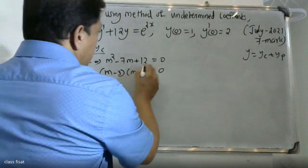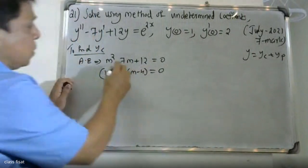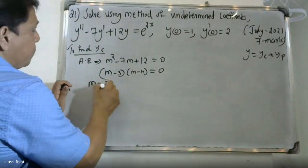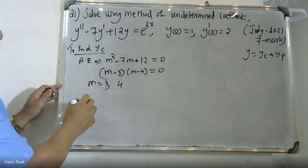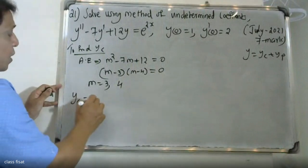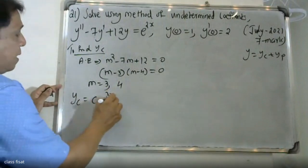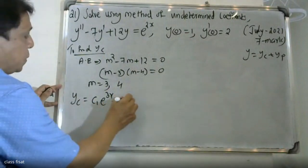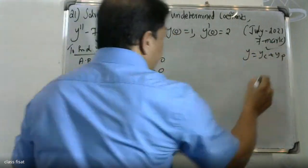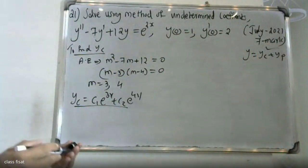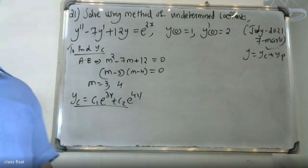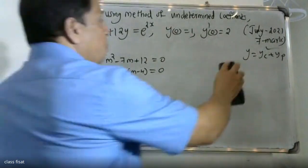That is equal to 0. Therefore m is equal to 3. The roots are 3 and 4 — roots are real and distinct. Therefore the complementary solution yc is equal to c1 times e raised to 3x plus c2 times e raised to 4x.